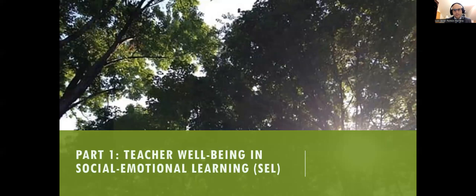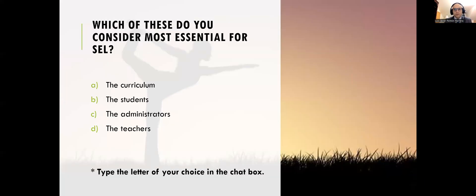The first part is teacher well-being in social-emotional learning. So which of these do you consider most essential for social-emotional learning? When we look at these four elements — the curriculum, the students, the administrators, the teachers — which of these four do you think is the most essential, the most vital for social-emotional learning?